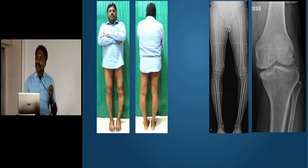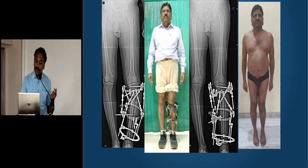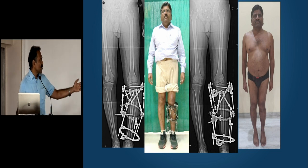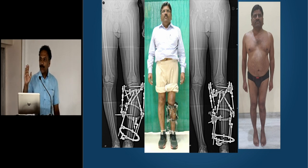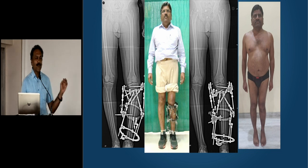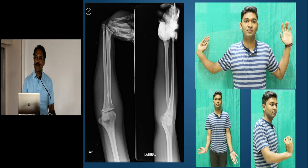The Taylor Spatial Frame (TSF) fixator gives us the ability to perform secondary corrections with the help of software. Here is a head of the Department of Medicine with a malunion leading to medial compartment arthritis, shortening, varus, and internal rotation. We put on the TSF fixator, program it with a high fibular osteotomy. Don't for a moment think that a proximal fibular osteotomy is going to do the job by itself — you have to correct the varus, rotation, and give length. He's back at work and even doing his Swedish exercises.